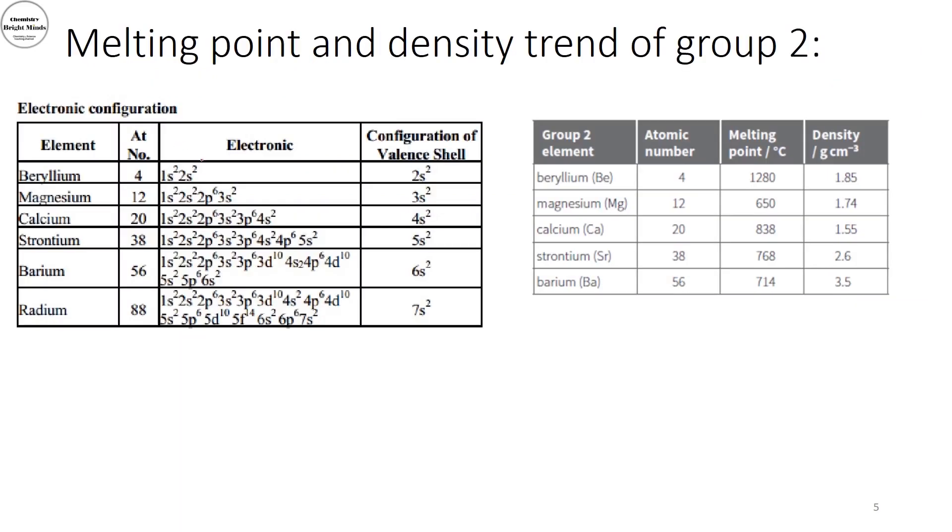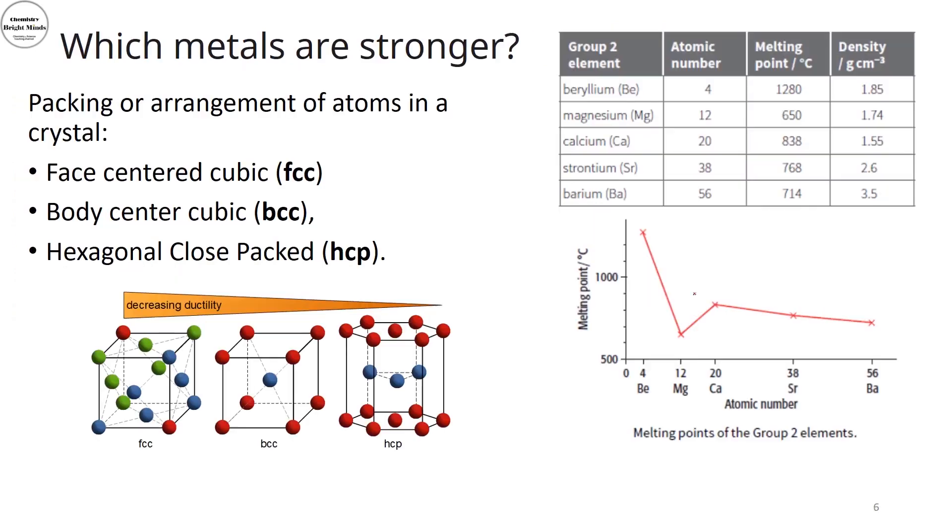Now, for melting points and density trends down group 2, you could see that I'm increasing the atomic number. So usually, you expect the melting points to decrease. And the density will just increase because I'm increasing the size of my atoms. And this size will lead to a higher density.